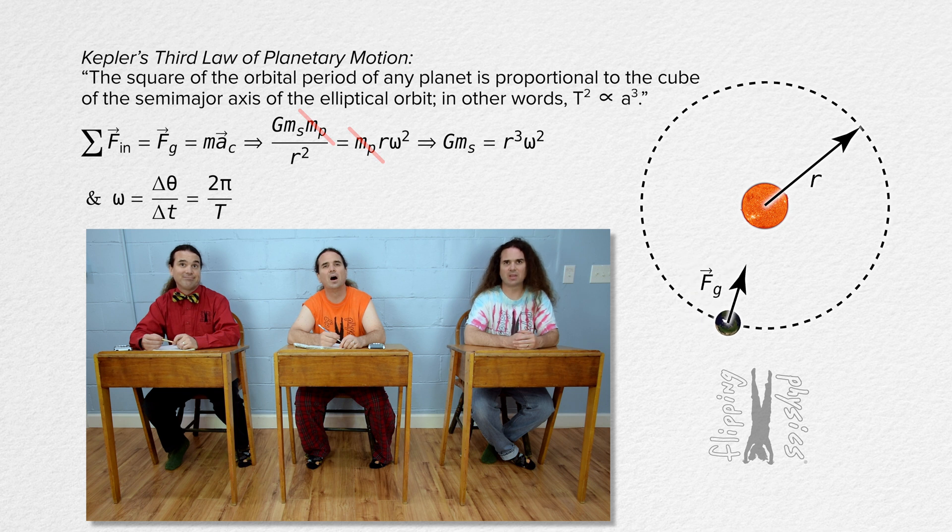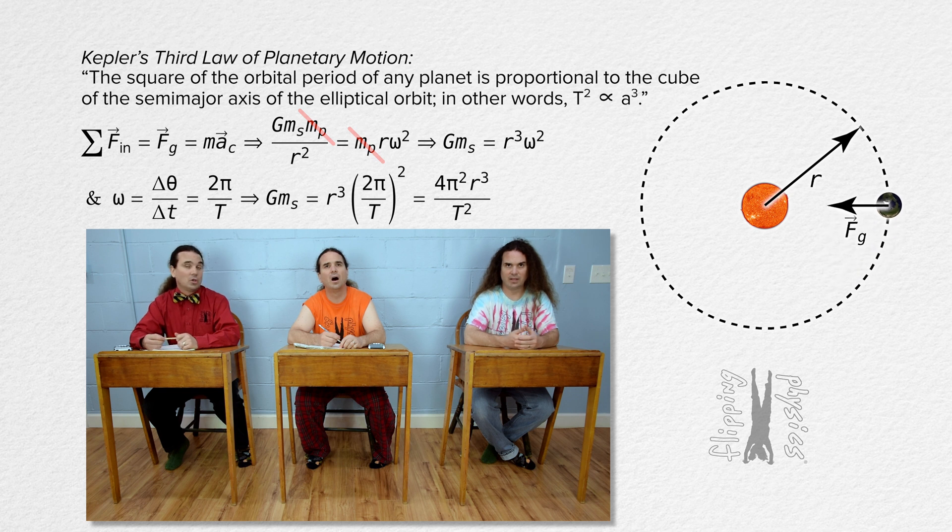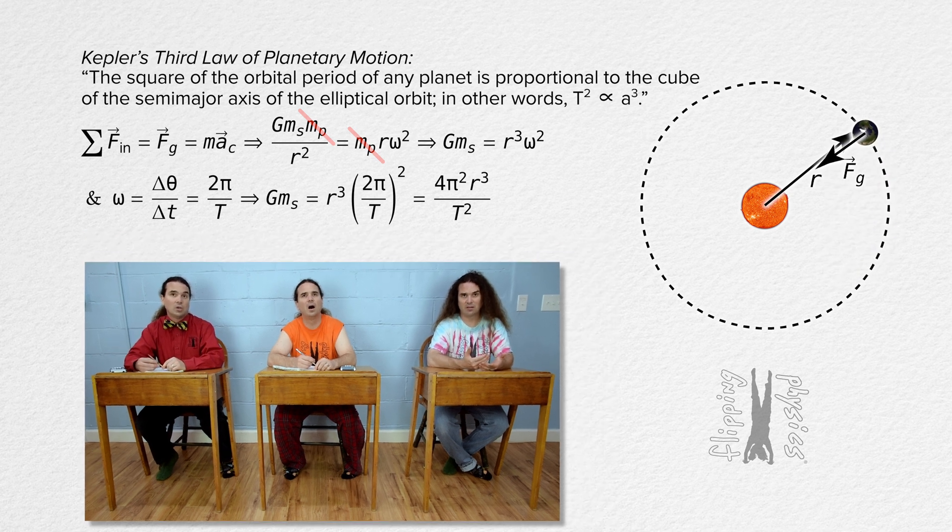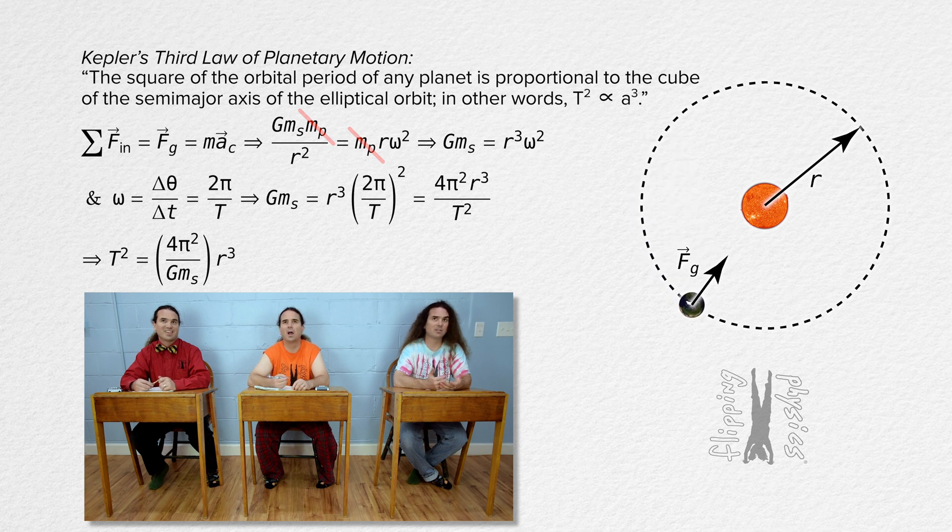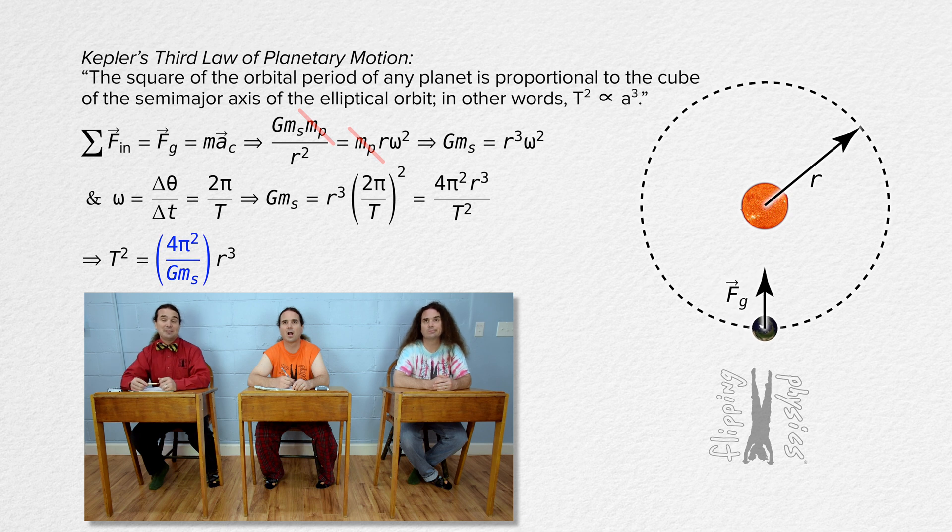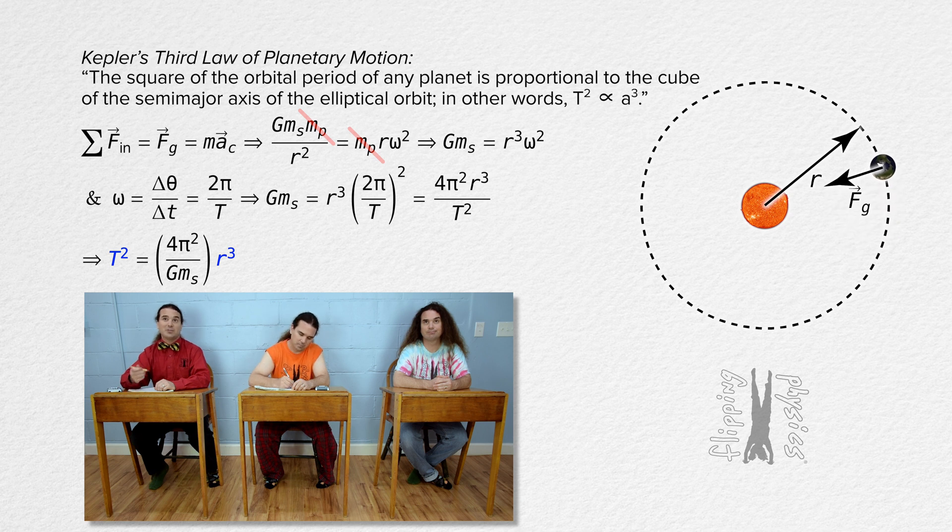Right, so we can substitute that into the equation I got, square everything in the parentheses, and solve for period squared. We get period squared equals the quantity 4π² over Newton's universal gravitational constant times the mass of the Sun, all times the radius of the orbit cubed. And everything in the parentheses is constant, so the square of orbital period is proportional to the cube of the orbital radius.